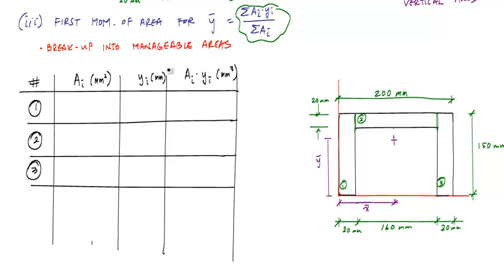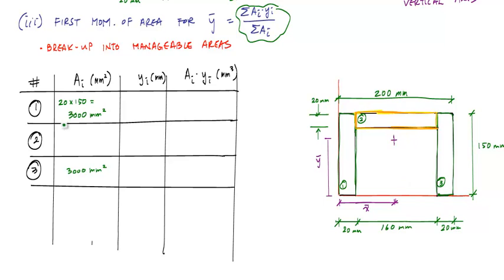Let's calculate the areas. Area one is base times height: 20 times 150, which gives 3,000 mm². Area three has the same dimensions, so it's also 3,000 mm². Area two in the middle is a base of 160 times a height of 20, giving an area of 3,200 mm².